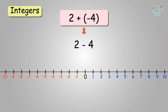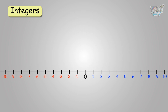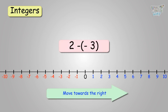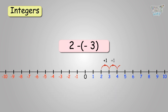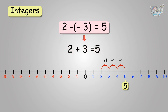We get 2 to 1, 1 to 0, 0 to negative 1, negative 1 to negative 2, to get negative 2. So remember, 2 plus negative 4 is the same as 2 minus 4. Now, we have to subtract negative 3 from 2. Move 3 places towards the right of 2. The answer will be 5. So, 2 minus negative 3 is the same as 2 plus 3. The answer is still 5.